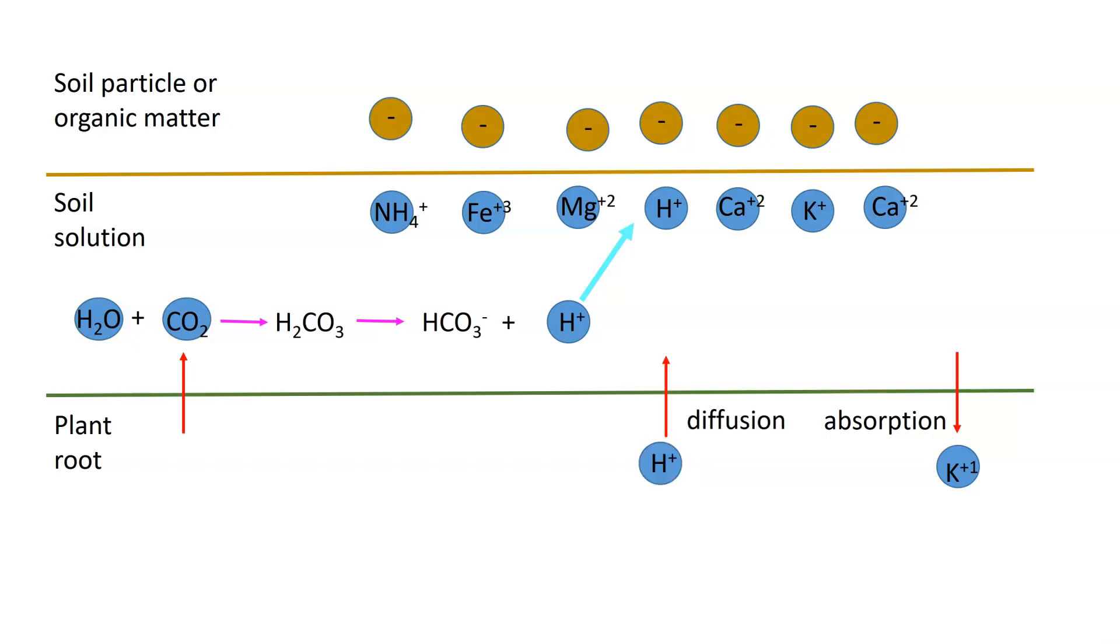You can have diffusion where we've got excess hydrogen ions coming out of the plant root. It diffuses across. It's going to dislodge another ion as it does. That ion is now going to come across. This is cation exchange capacity. This is the way plant roots absorb materials.